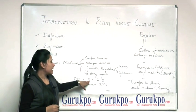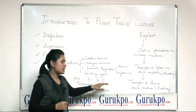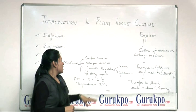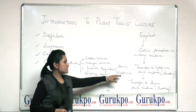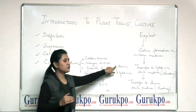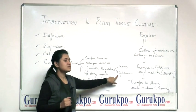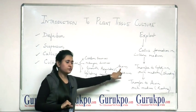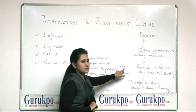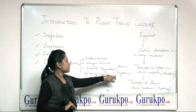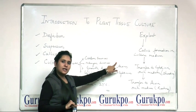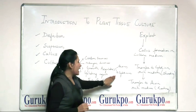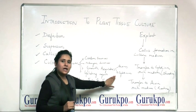A pH of about 5 to 6.5 is necessary to maintain, and a temperature of 27 degrees centigrade. Auxins are necessary for the growth of roots, and cytokinins are necessary for the growth of shoots. Auxins include 2,4-D (2,4-dichlorophenoxyacetic acid) and IAA (indoleacetic acid). Cytokinins include kinetin and BAP (benzyl aminopurine).